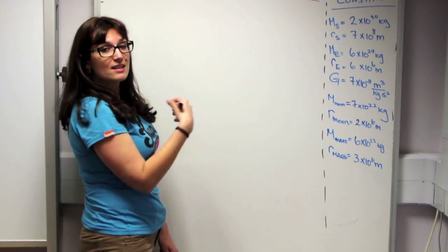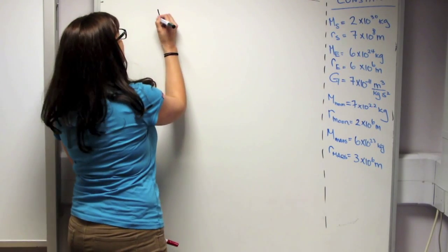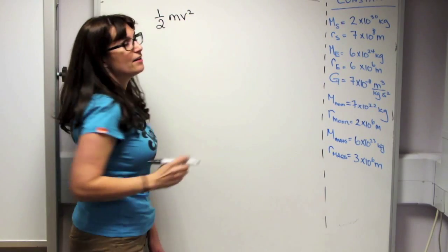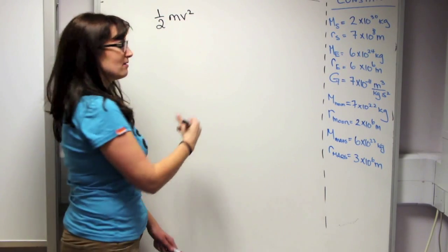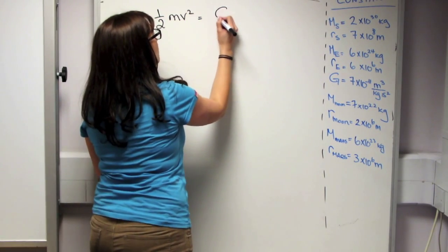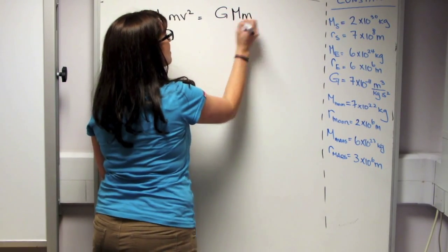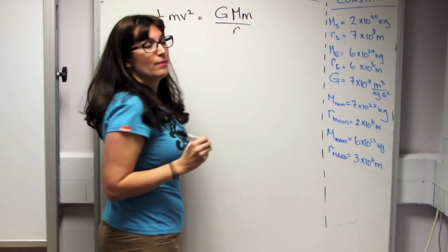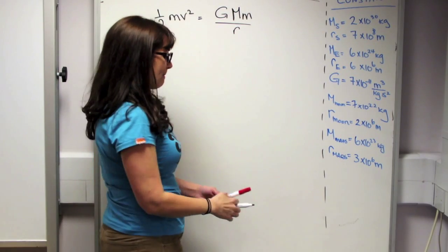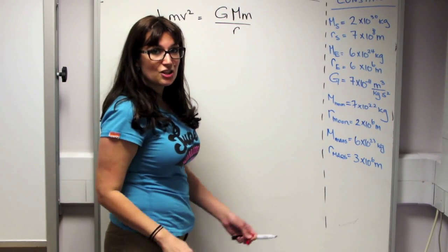I'll set the kinetic energy, one half mv squared, where the little m again is the mass of the ball, equal to Newton's constant, G, times the mass of the Earth, times the mass of the ball, divided by the radius of the Earth. Now here an interesting cancellation happens.